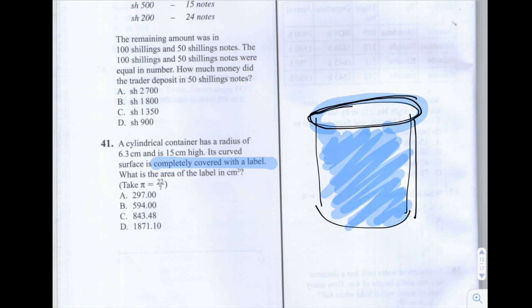So if you imagine if you unraveled the label from the container and you stuck it flat on a table, it would look something like this. Where this here is the height and that's given to us as 15cm. And this here is the perimeter or the circumference of the circle or the cylinder here. So this is the circumference.